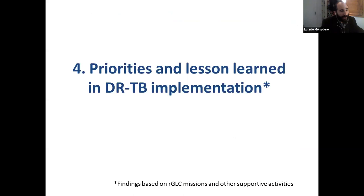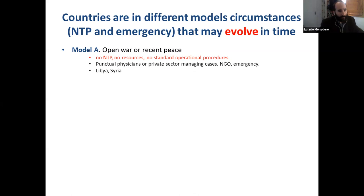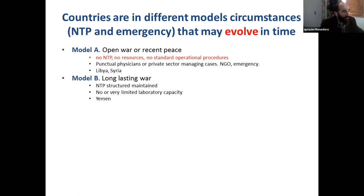Priorities and lessons learned: when doing situation analysis, we find different models. Model A — when there is open war or recent peace, with no NTP or no resources, usually what we find is individual physicians or private sector managing cases. The NTP does not exist, so we have to rebuild everything from the beginning — the example of Libya and probably Syria, where all infrastructure for diagnosis was completely lost. Model B — a long-lasting war but with a very well-structured and maintained NTP, with laboratory limitations but continuing good work. This is the example of Yemen.